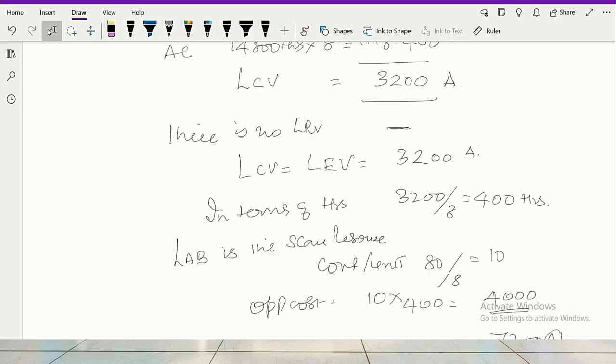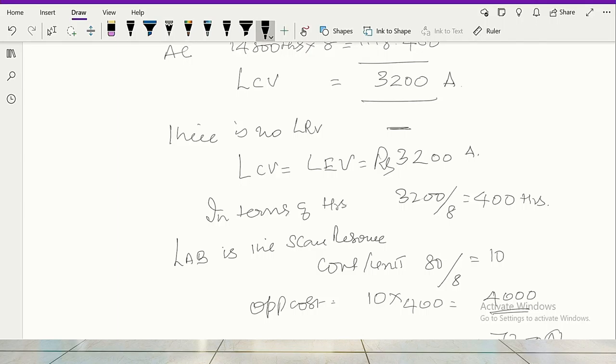So rupees, that is rupees 3,200. You should take it there. This is rupees. So in terms of hours divided by standard rate, 3,200 by 8, 400 hours wasted. So when labor is the key factor, then contribution lost because of 400 hours we have to take. So opportunity cost is 4,000. In other words, 7,200 is lost.